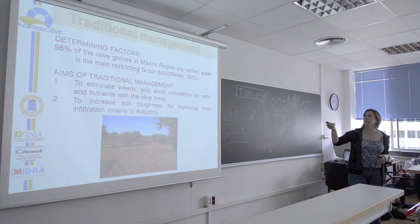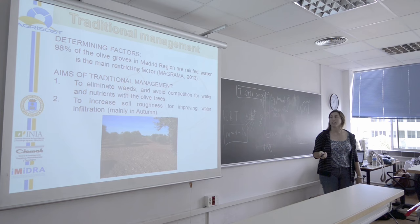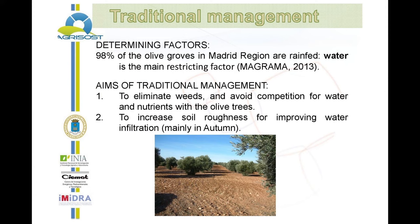The other way to deal with water problems is to eliminate weeds with tillage. In this way, they can avoid competition for water and nutrients with the olive trees. The other function of tillage is in autumn, to increase the soil roughness to improve water infiltration. But this is very, very temporary.